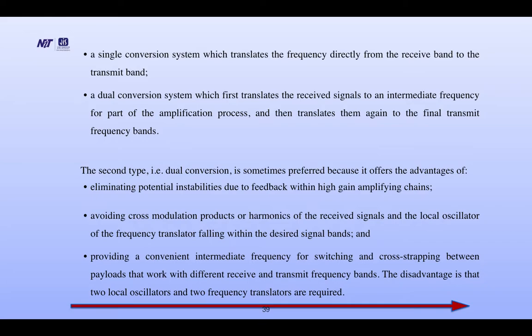The dual conversion system then translates signals again to the final transmit frequency bands. The dual conversion is sometimes preferred because it offers the advantage of eliminating potential instabilities due to feedback within high-gain amplifying chains, avoiding cross-modulation products or harmonics falling within the desired signal bands, and providing a convenient intermediate frequency for switching and cross-strapping between payloads. The disadvantage is that two local oscillators and two frequency translators are used.